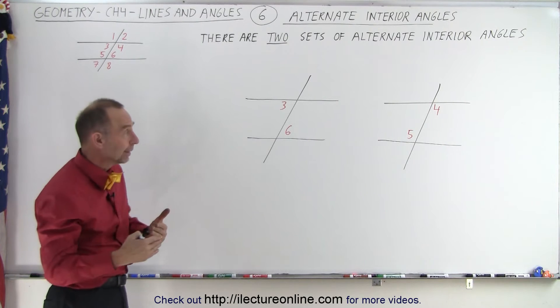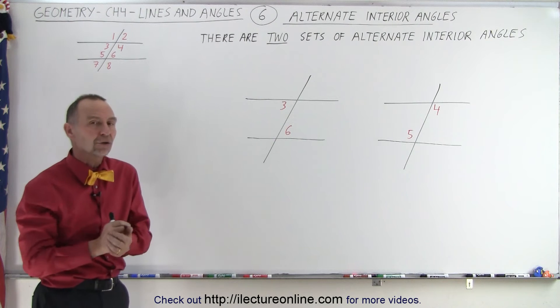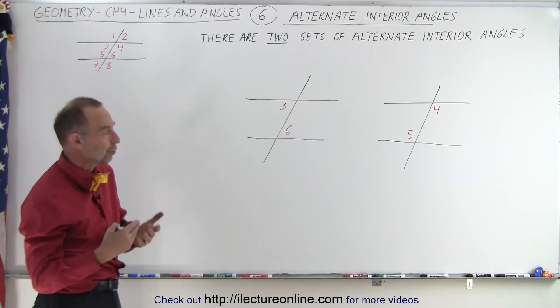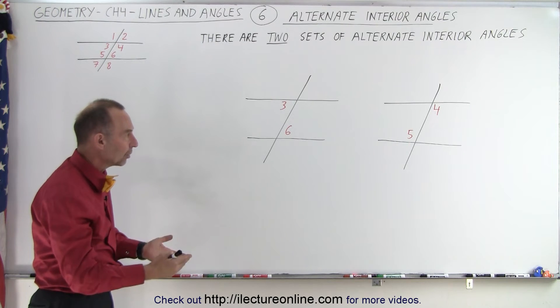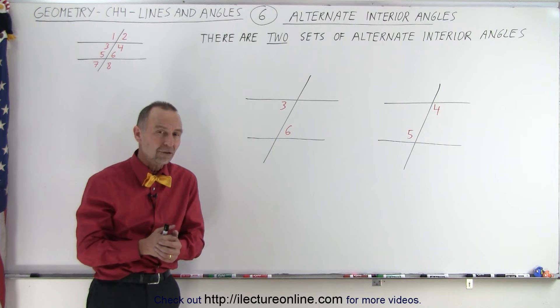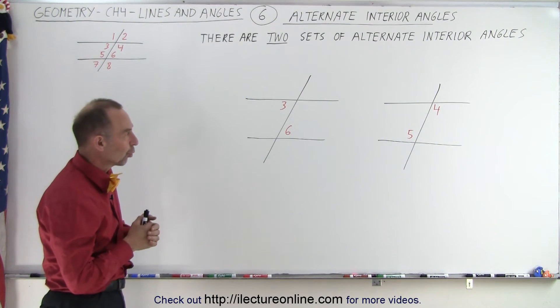Now if the lines are parallel, then we know that the alternate interior angles are congruent, meaning they have the same measure, and that is often a very useful thing to know when we're dealing with angles in geometric figures, in all kinds of applications in mathematics and physics. So this is one that you probably want to remember for sure.